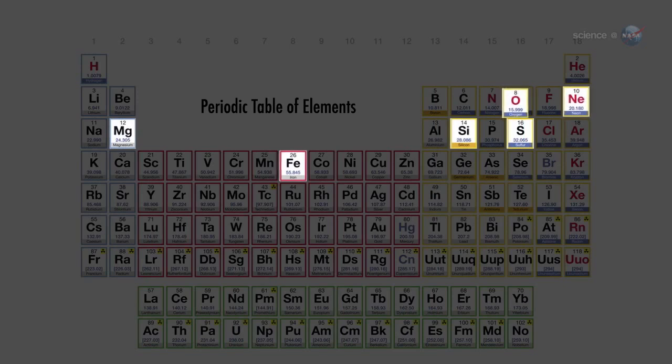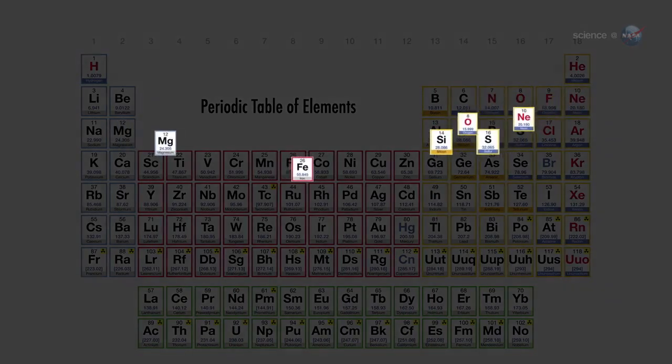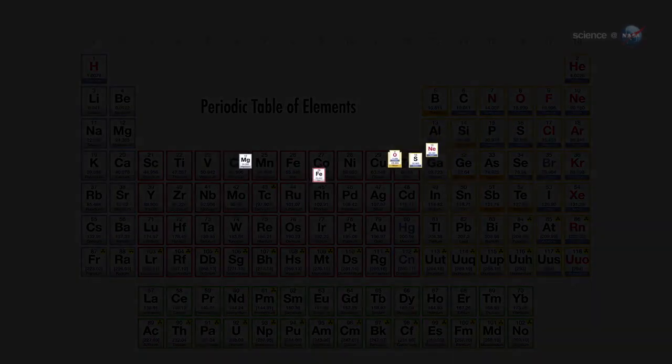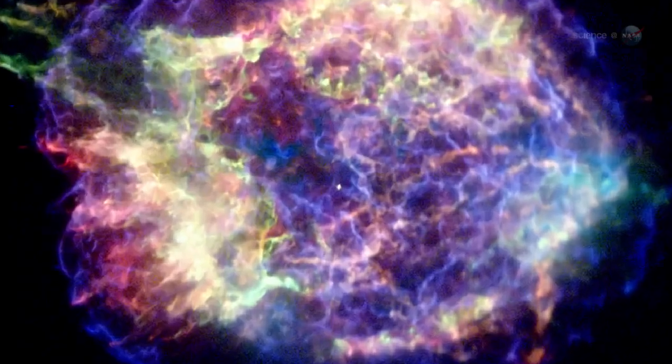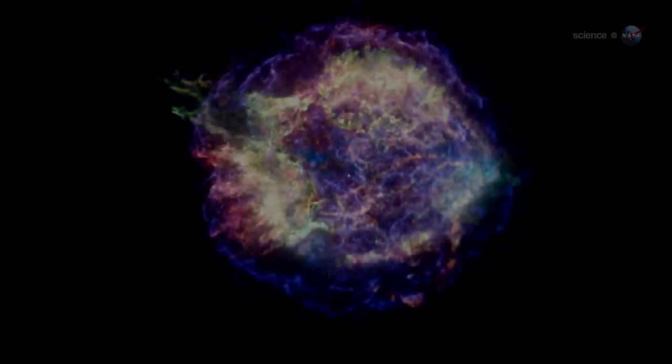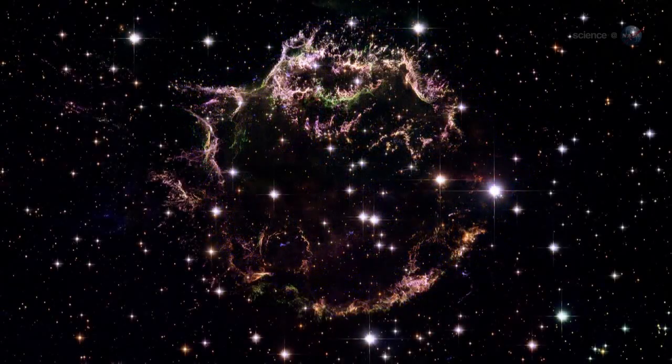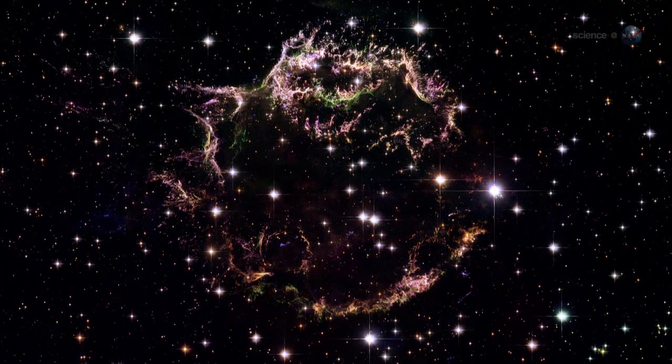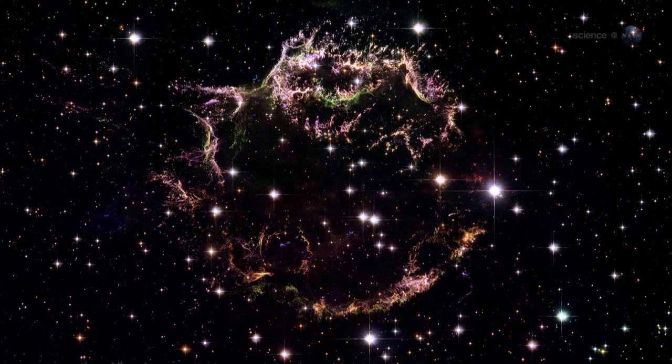Comparing a chemical model of the original star to the actual distribution of elements seen today, they realized something amazing. When the star exploded, it turned itself inside out. Most of the iron, which originally formed deep inside of the star, is now located near the outer edges of the debris cloud. Other heavy elements are also located at the outer limits of the debris zone.